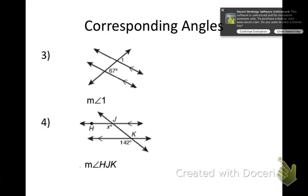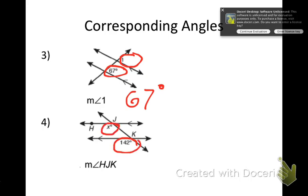Same idea here. I want to use corresponding angles to find some missing angles. Number 3: I have an angle of 67°, and I want to find the measure of angle 1. Angle 1 is 67° — because those two angles are corresponding. Number 4: I'm given 142°, so x is also 142° because they are corresponding angles.